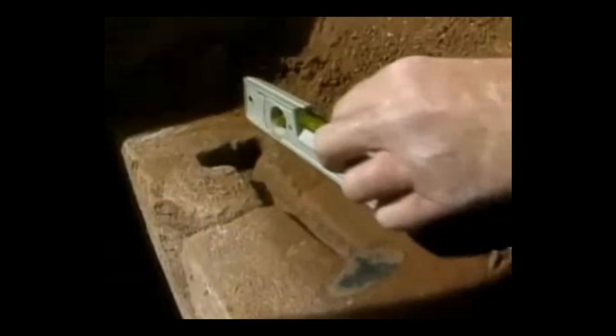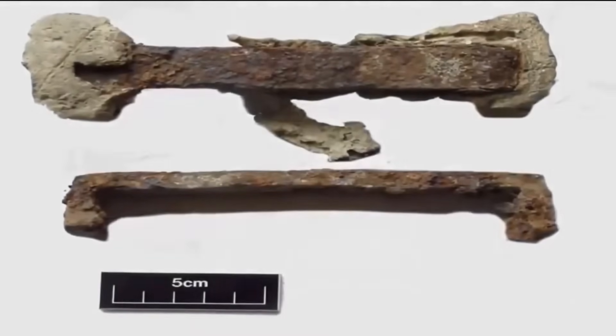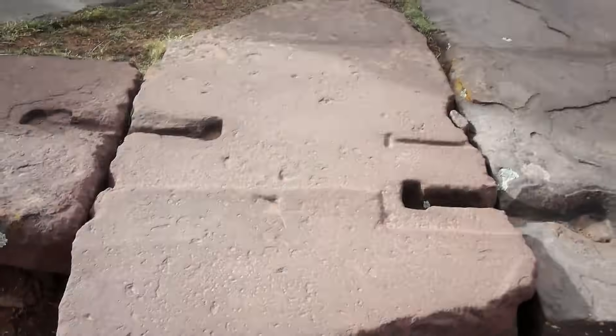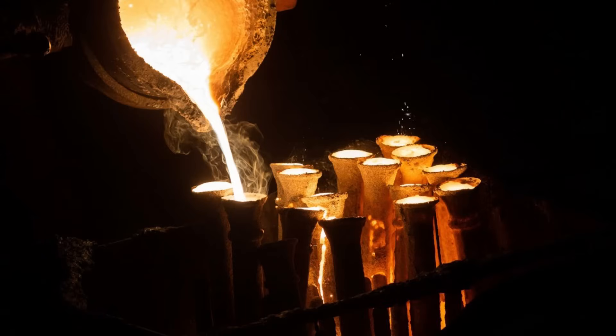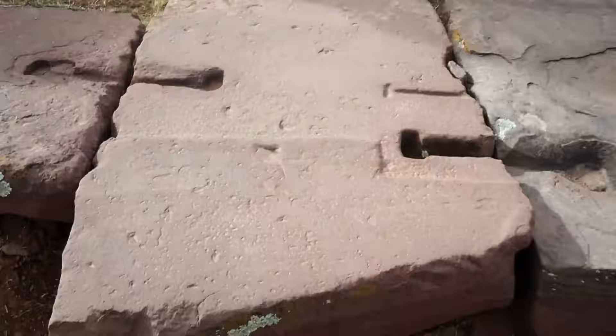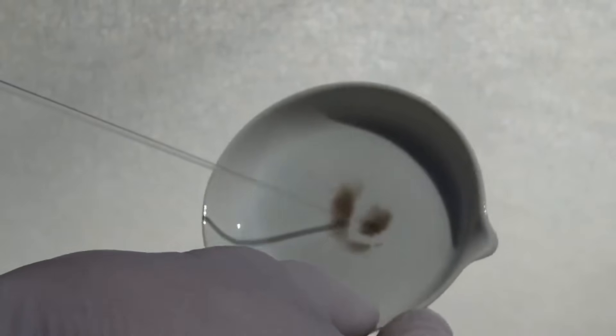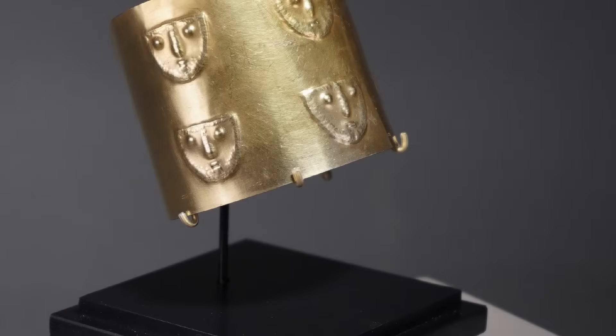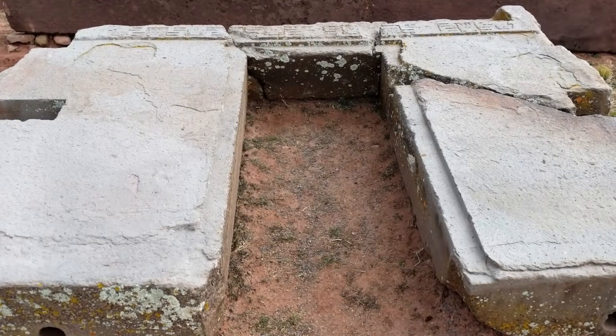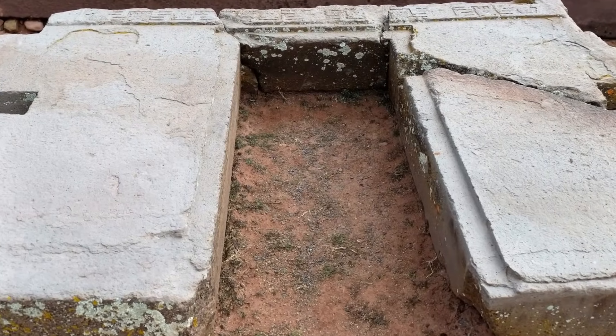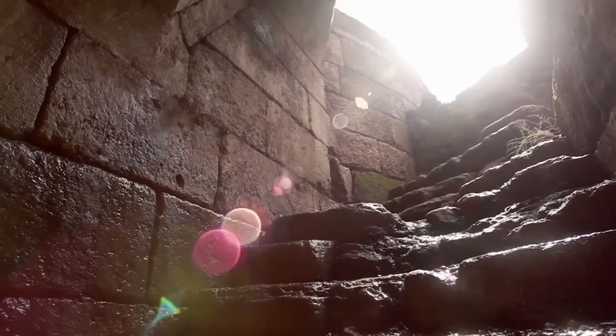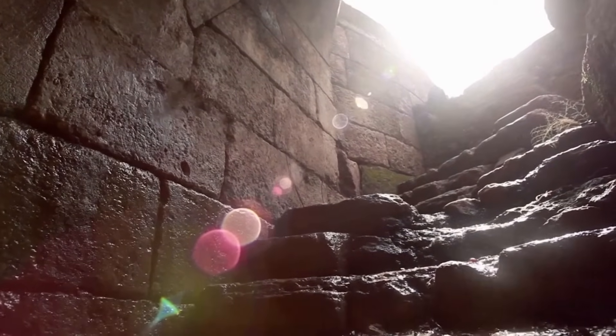Another feature that draws attention is the use of metal clamps. Archaeologists have uncovered traces of bronze I-shaped staples embedded in the joints between blocks. These clamps, cast from a copper-tin alloy, were poured into precisely cut sockets, then hammered flat to bind adjacent stones. Metallurgical analysis confirms the clamps contain traces of arsenic, a signature of pre-Columbian Andean bronze technology. The presence of these clamps suggests a deliberate strategy to reinforce the masonry, reducing the risk of separation during seismic events or heavy rainfall.